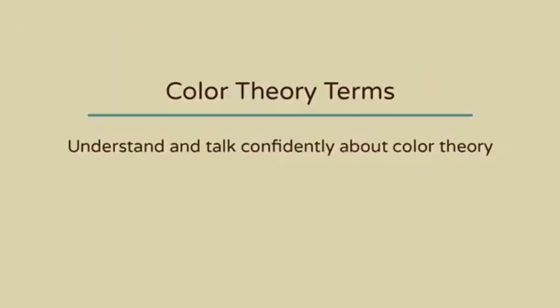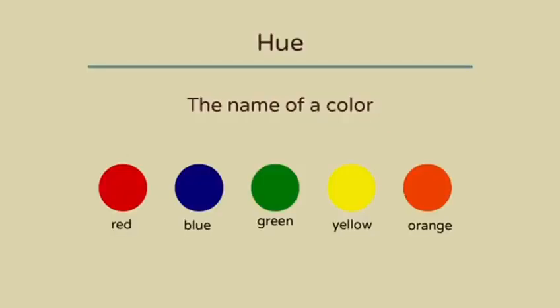Now let's go over some basic terms to help you better understand and talk about color theory. A hue is the name of a color, like red, blue, green, yellow, and orange.